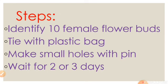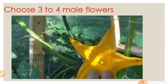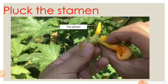Once pumpkin flower buds appear, immediately identify 10 female flower buds from the plant and tie a plastic bag around each bud so that no outside material can enter. Make small holes with a pin to allow airflow and wait 2 to 3 days for them to bloom. In between, choose 3 to 4 male flowers, pluck their stamens, and dust or collect the pollen grains onto a sheet of paper.